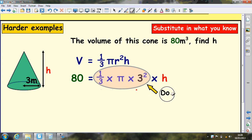Again, same idea. Do this calculation first, this bit in here with all the numbers. So type into your calculator 1 divided by 3 times 3.14 times 3 squared. Do all that in your calculator. Write the 80 down as normal, write the times h as normal, and this bit comes to 9.42.